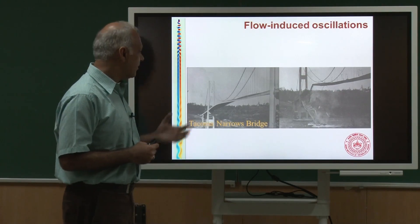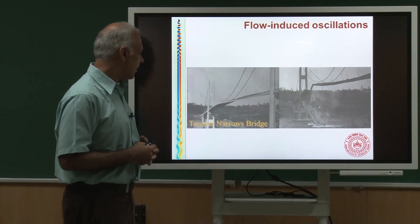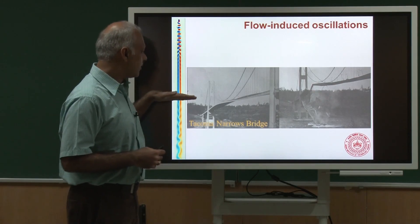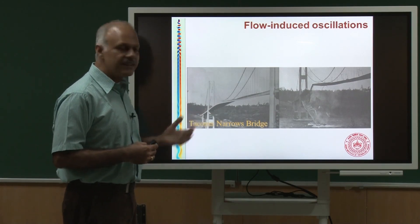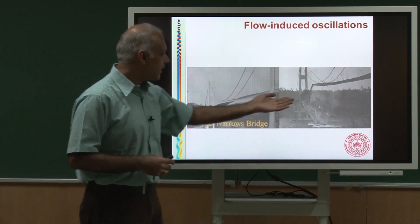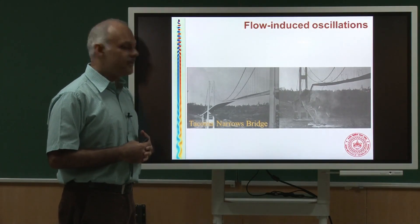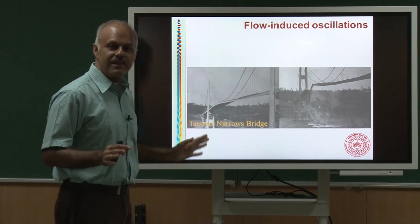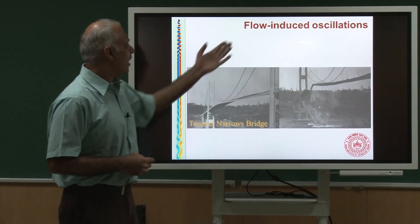It is not just flying structures — even bridges are affected. Here is an example of a disaster caused by wind loads: the famous Tacoma Narrows bridge. On a very windy day, this bridge started developing oscillations — galloping oscillations as we call them — which became very large and eventually led to the bridge breaking down. There was a car stranded on the bridge; fortunately there were no fatalities, but this became a landmark case of flow-induced oscillations.